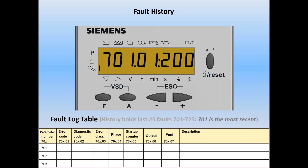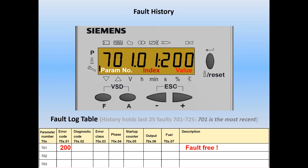On your screen you'll see three sections: the parameter number, the index (in this case 01), and the value of that parameter and index — in this case 200. We enter 200 into row 701, column 01. When we look that up in the book, fault code 200 is ironically 'no fault,' which just tells us the burner is fault-free at the moment.